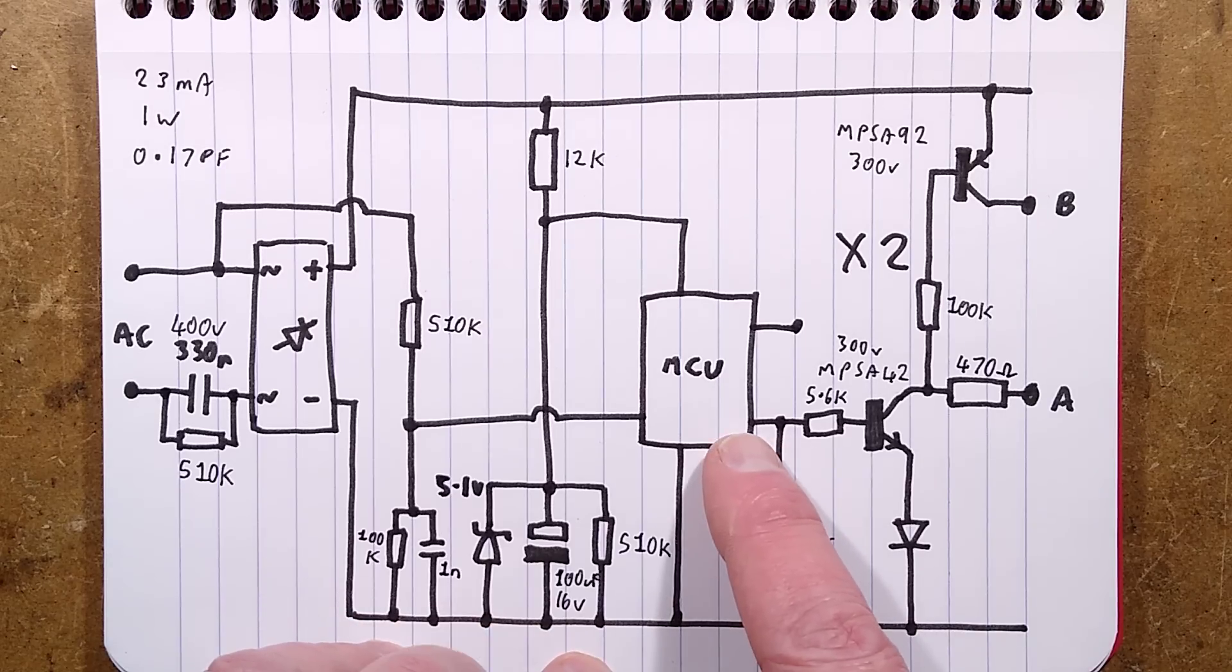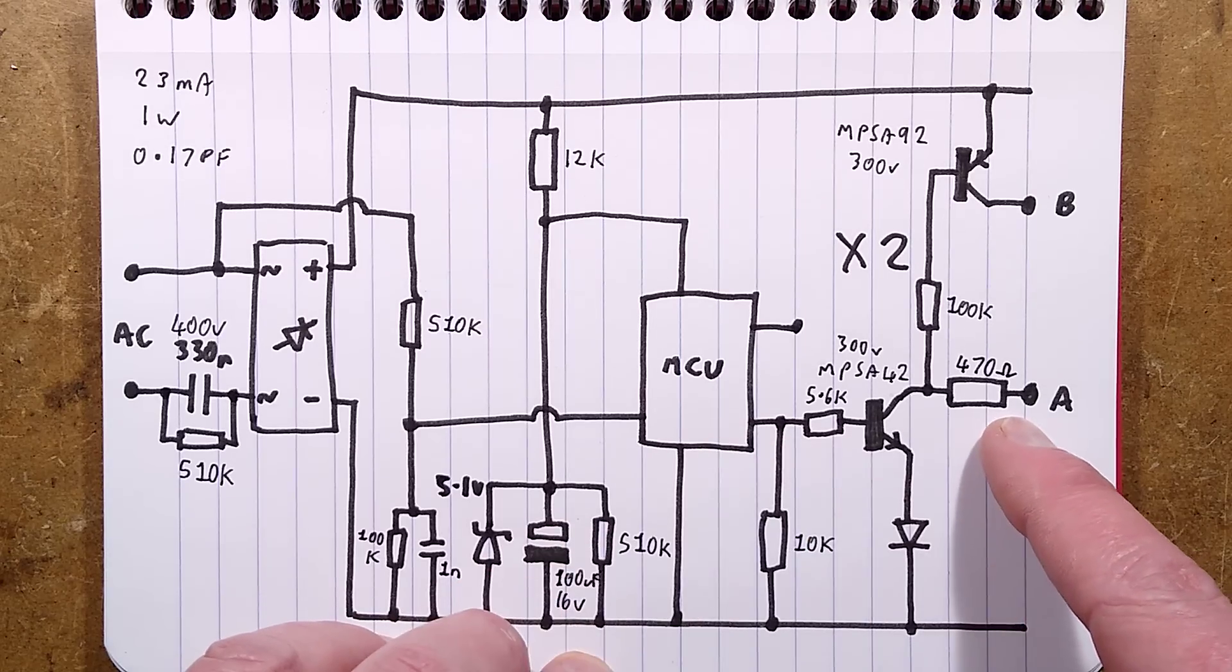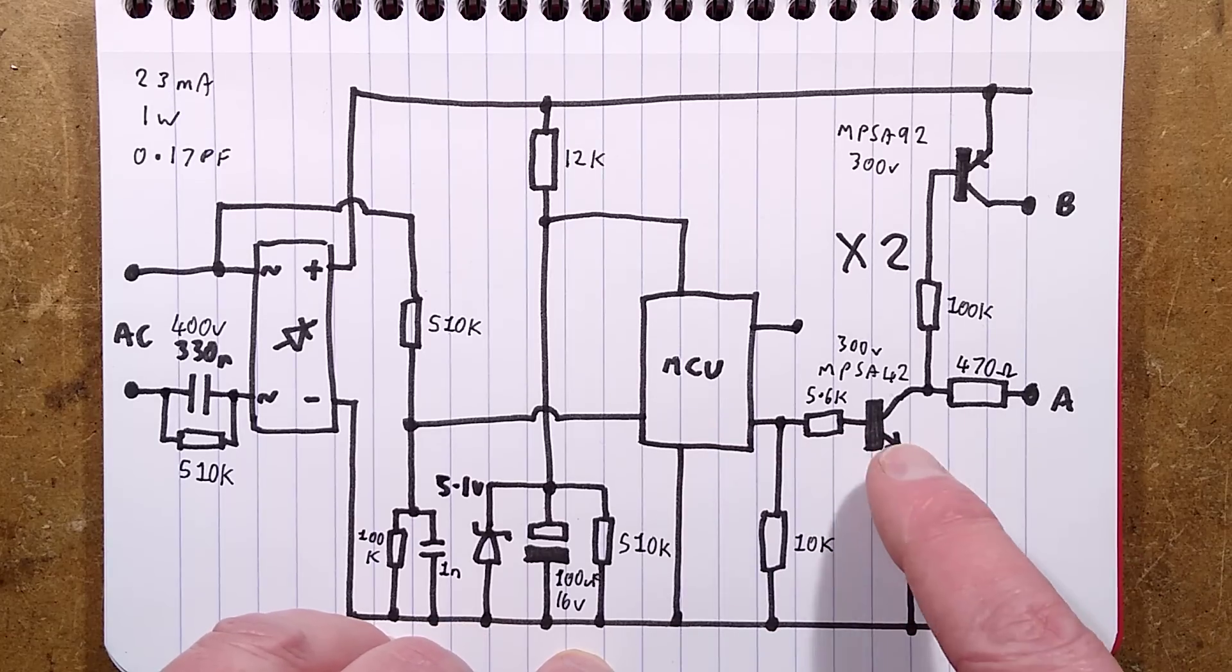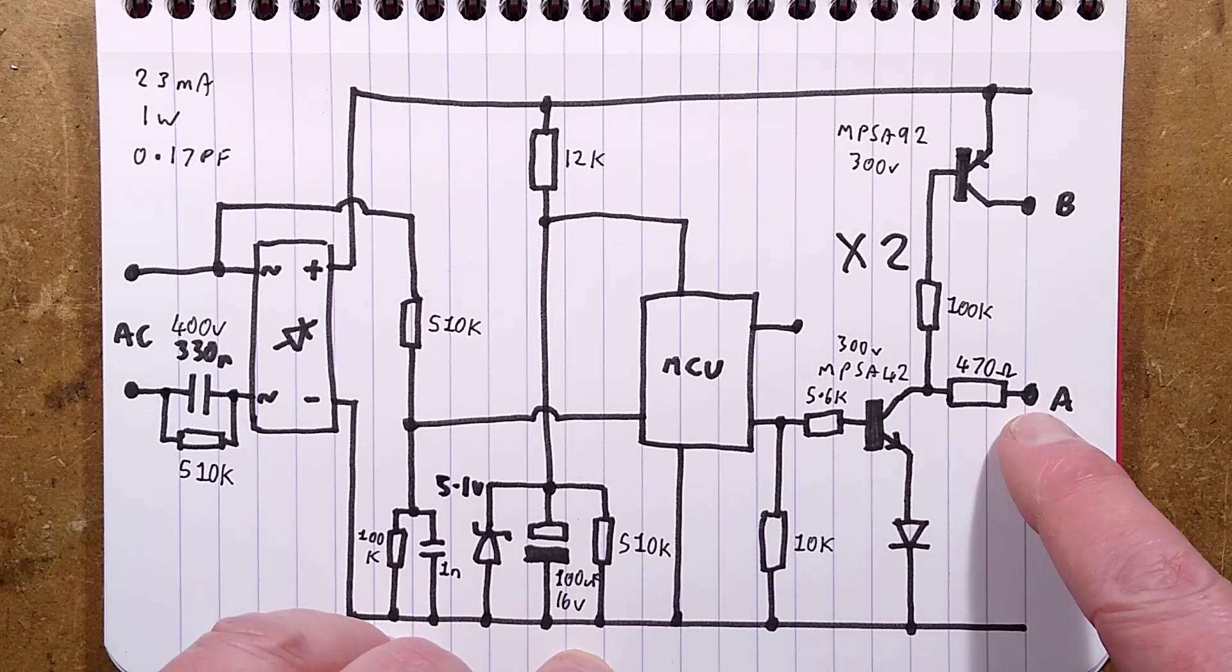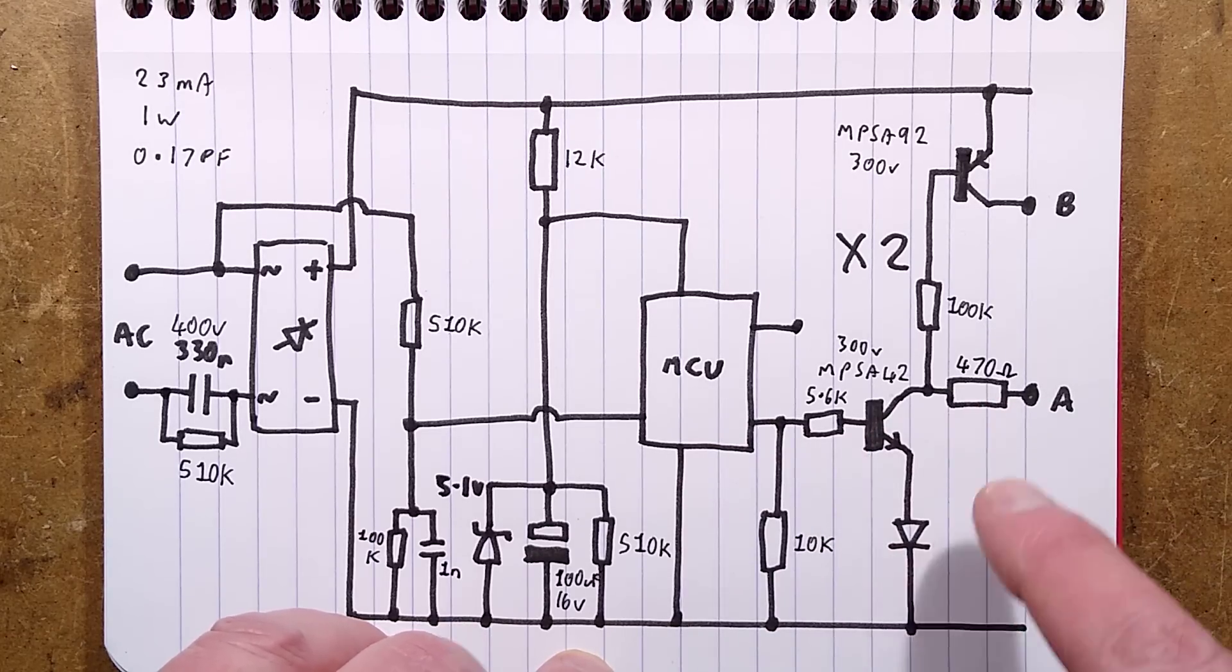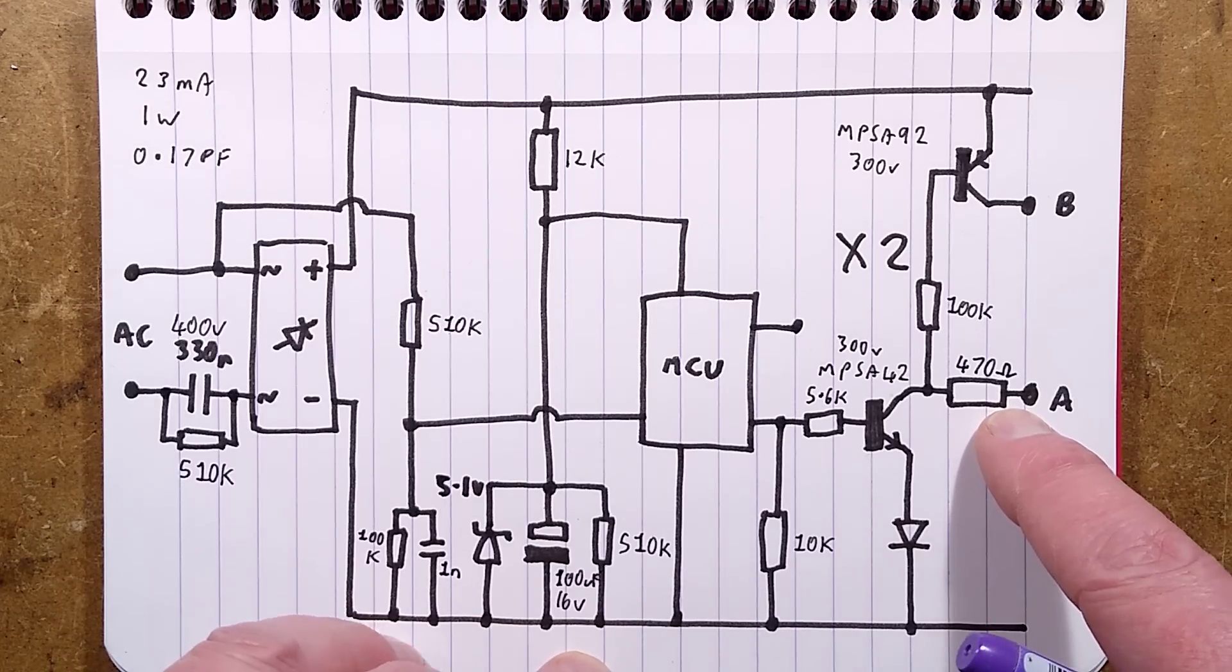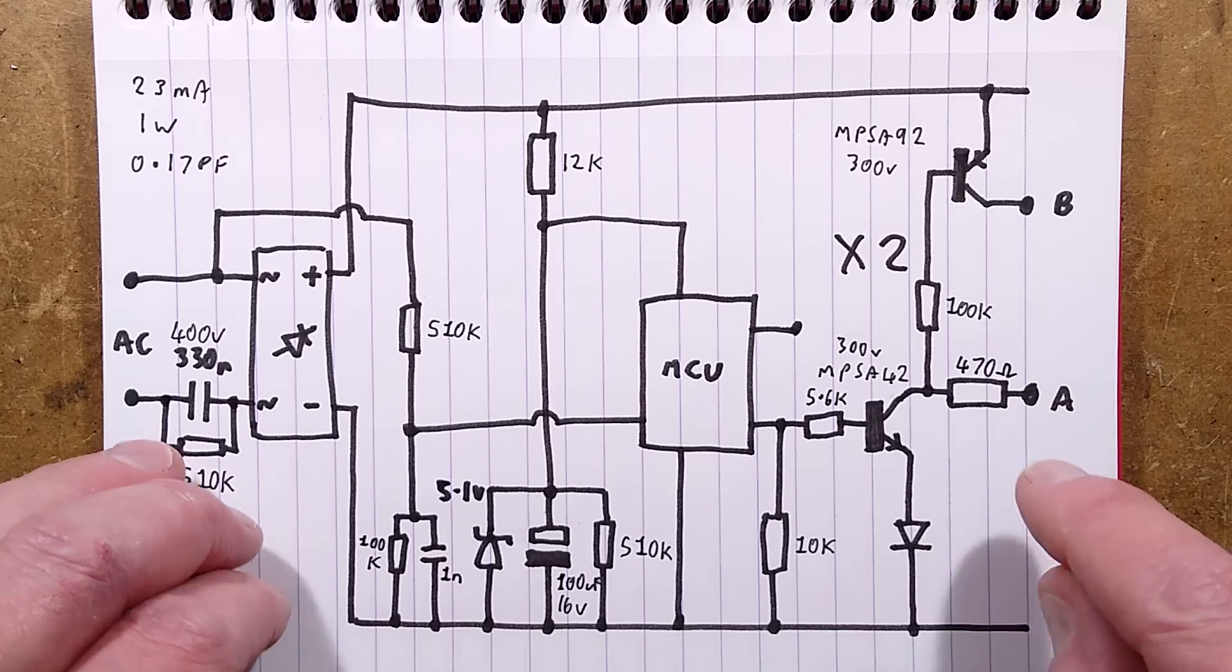So when it wants to turn on say channel A negative, then it turns on this transistor and that transistor does indeed turn on the A, it pulls it down to the negative rail via that diode, via a 470 ohm resistor and that's just generic sort of current limiting to avoid peaks and spikes.